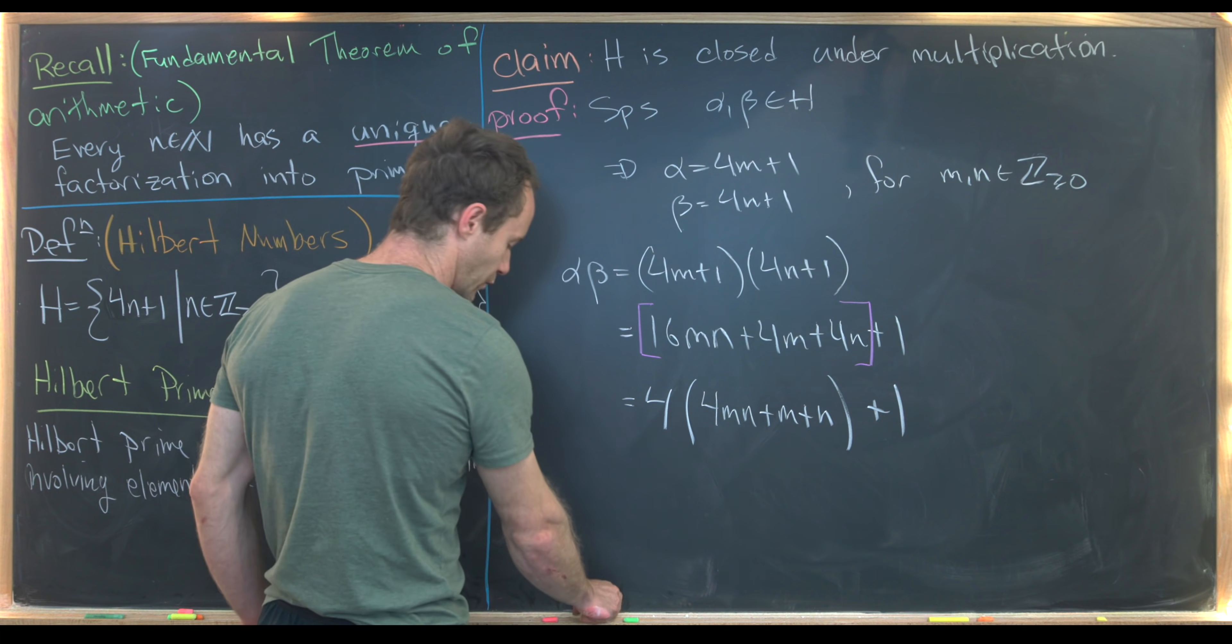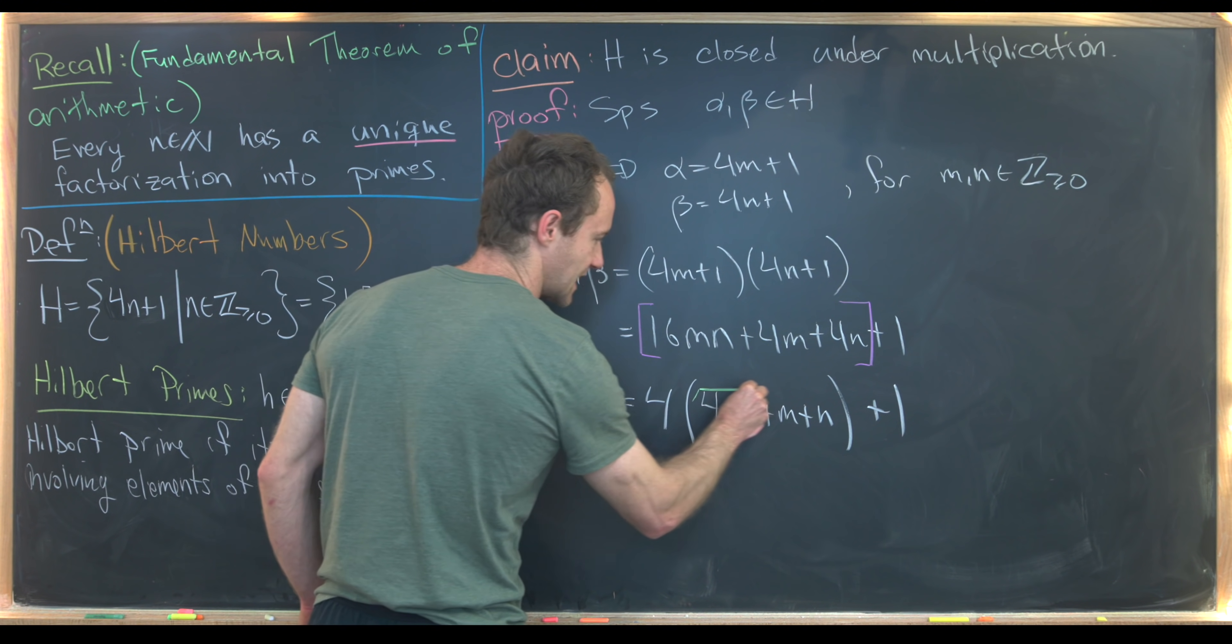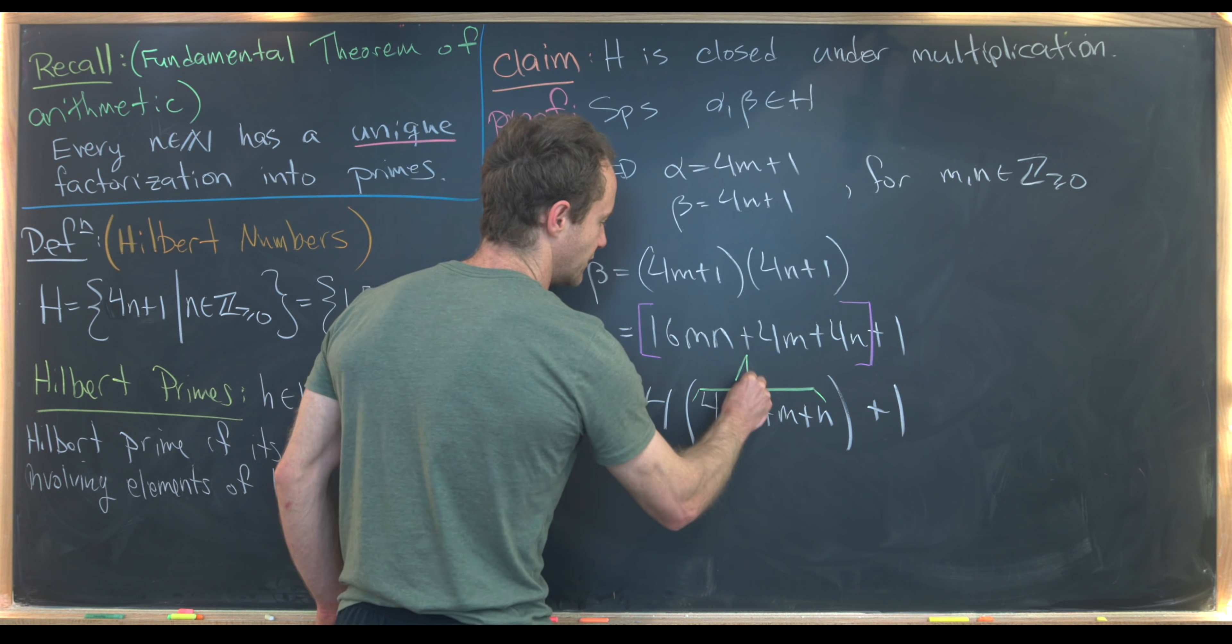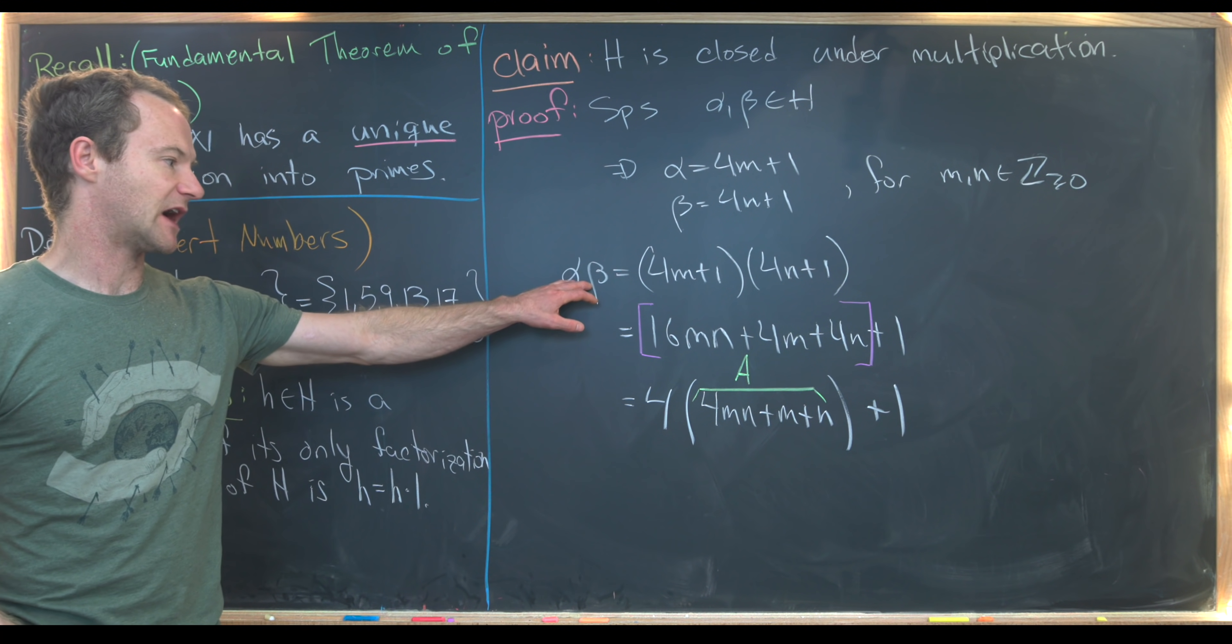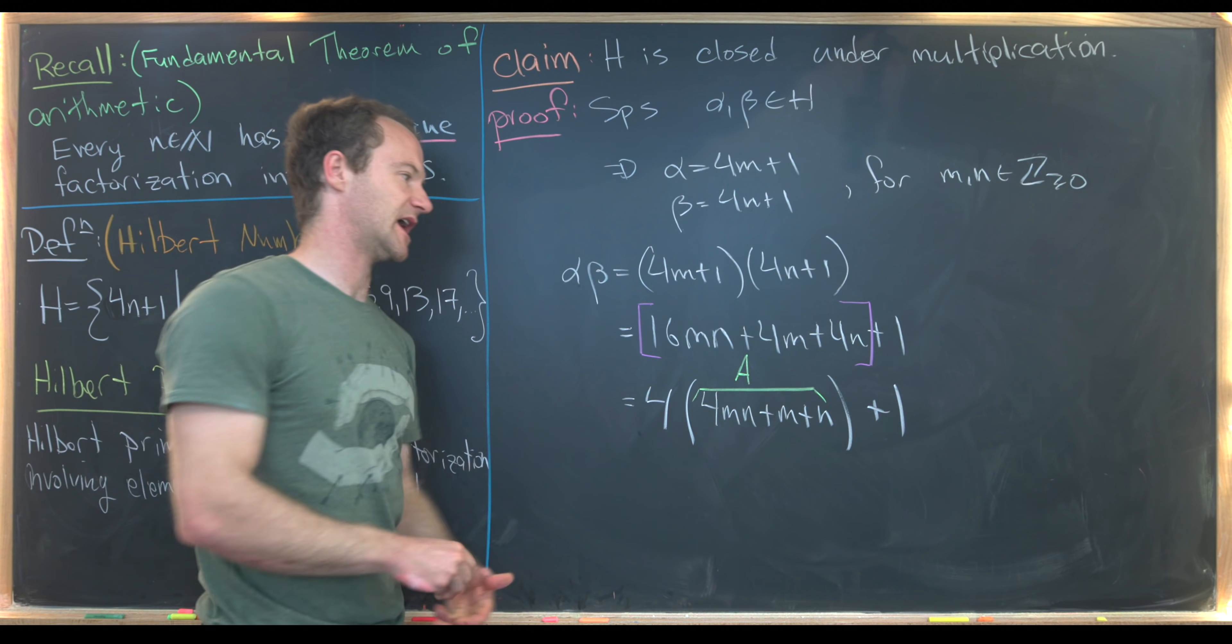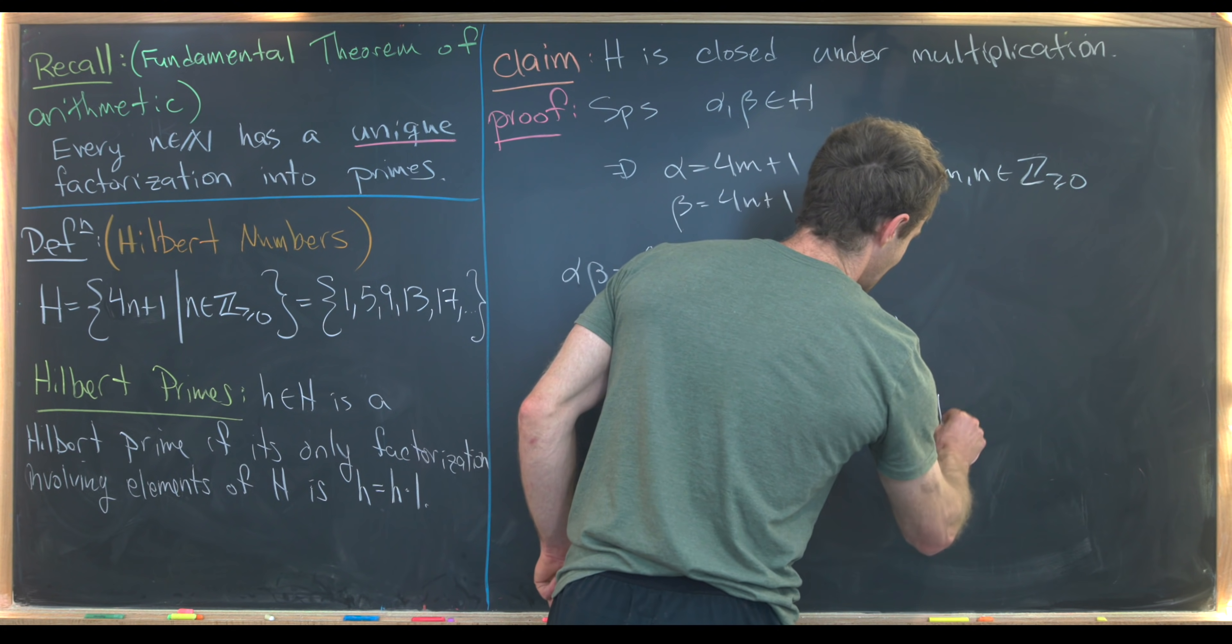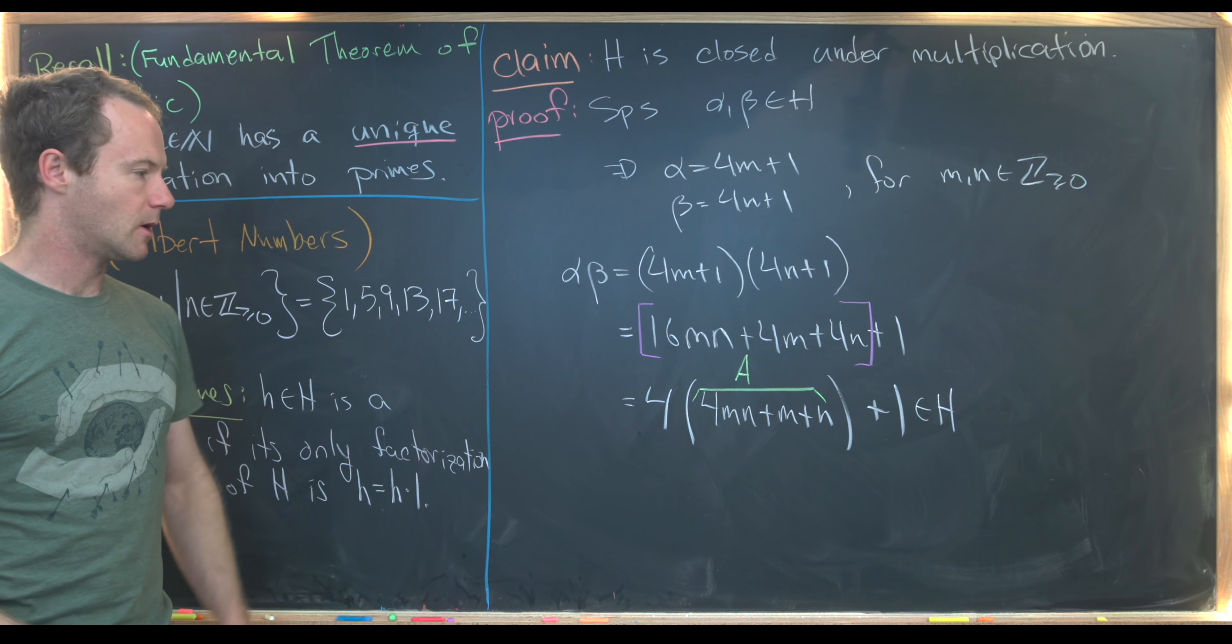So this is going to be equal to 4 times the quantity 4mn plus m plus n, and then we've got a 1 on the outside. We could group all of these together into a new number, which we would maybe call capital A. And notice we've got alpha times beta is 4 times A plus 1, but that means it's obviously in H.